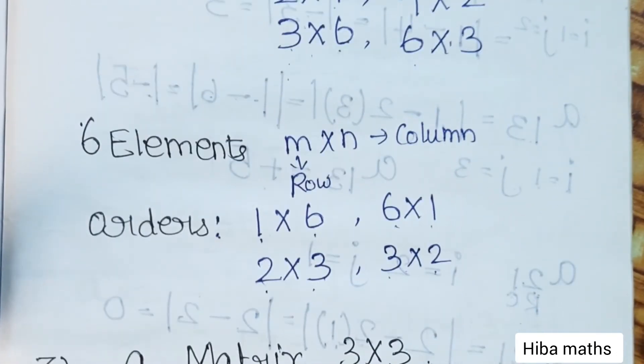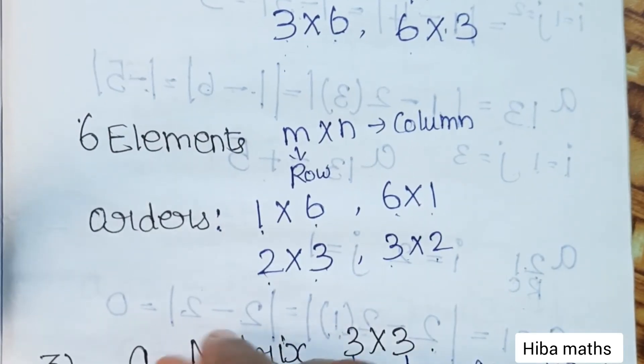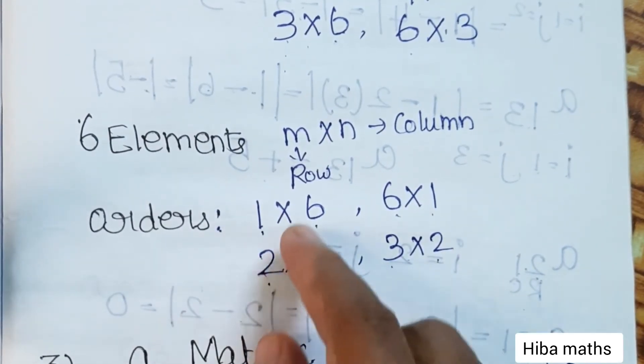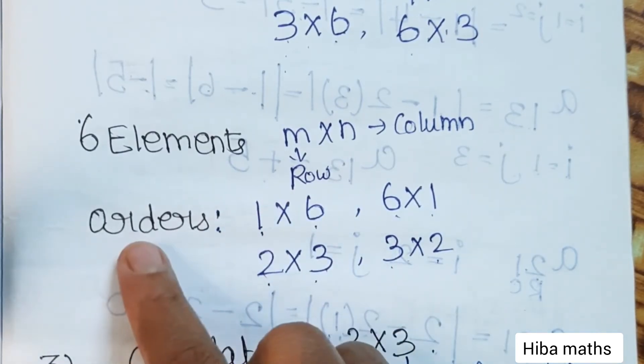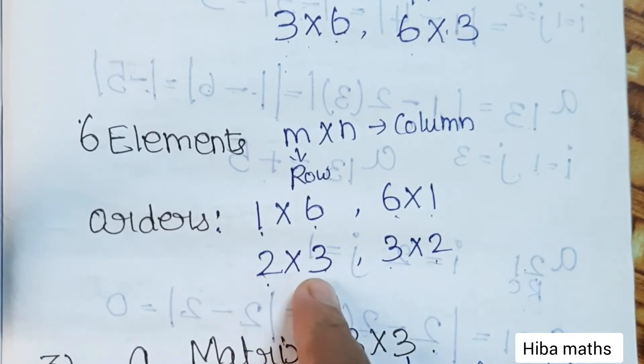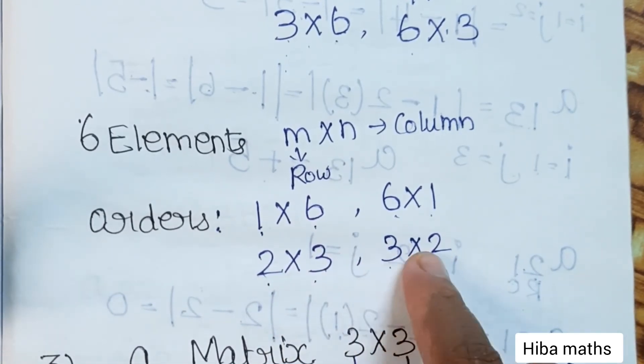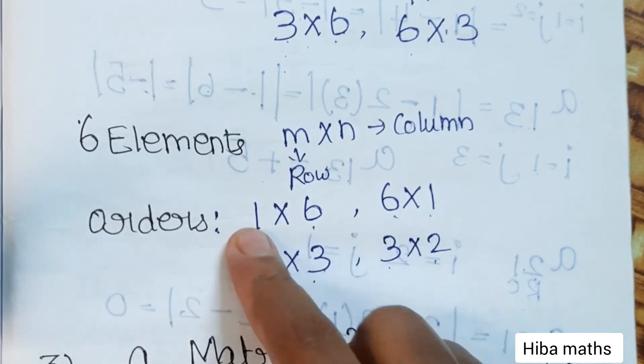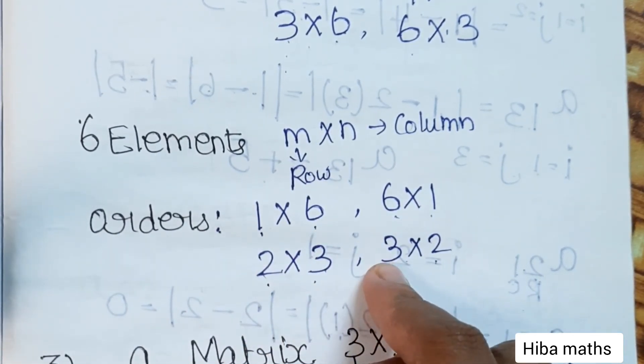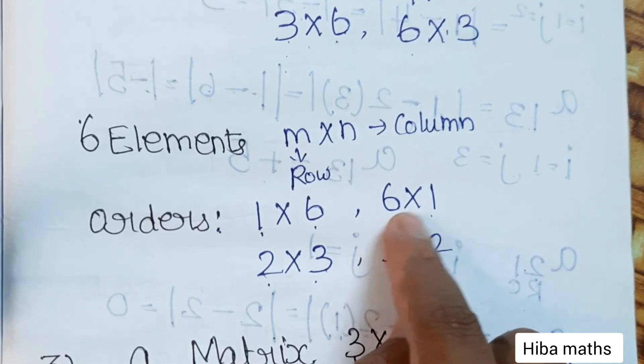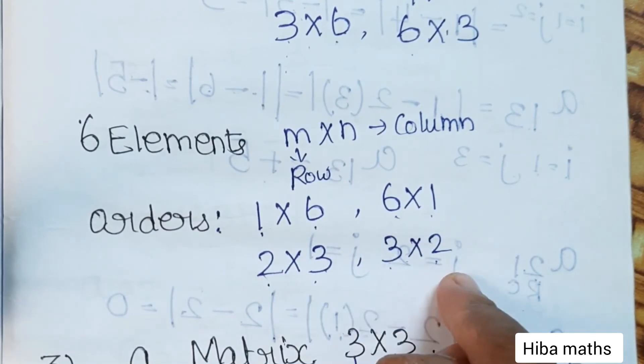Now 6 elements. Same method: row into column, m into n orders. 1 table gives 6, 2 table gives 6 as 2×3, then 3×2, then 6×1. So: 1 row 6 columns, 2 rows 3 columns, 3 rows 2 columns, 6 rows and 1 column. I hope you understand.